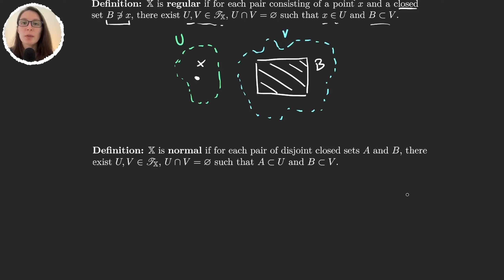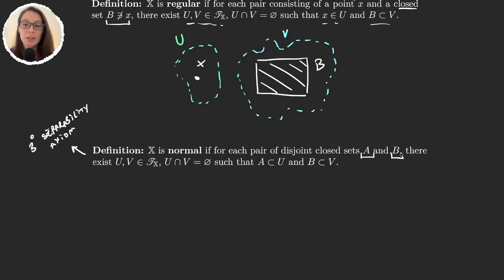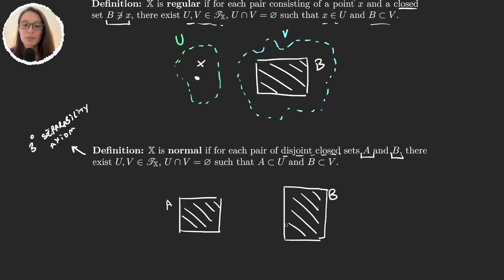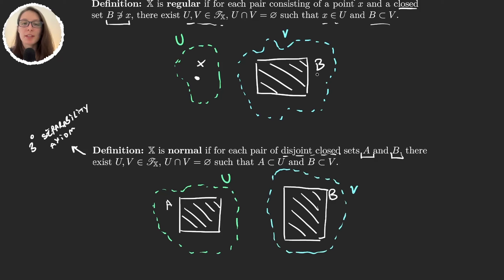For the third separability axiom, we are now asking for a bit more than just a point and a set. We say that a space is normal if it separates two closed sets. So now we have two sets A and B that are disjoint and closed, and if our space is normal we are able to find two open sets U and V that separate them. These separability axioms are very important and they will connect with the countability axioms to reach conclusions about our space. One of those conclusions is the well-known Urysohn Metrisation theorem, which we will see in a few videos.